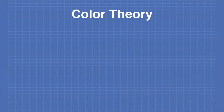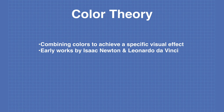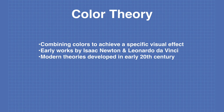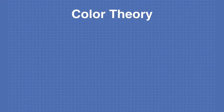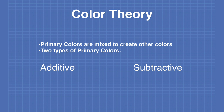Before we get into our experiments, I think it's very useful if we know a little bit about color, so let's examine some color theory first. Color theory is the theory of combining colors to achieve a specific visual effect. Early work began in the mid-1400s and has involved such luminaries as Isaac Newton and Leonardo da Vinci. Modern color theory was developed starting in the early 20th century. In color theory, primary colors are mixed to create other colors, and there are two types: additive colors and subtractive colors.